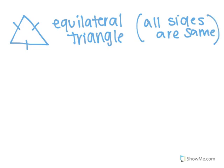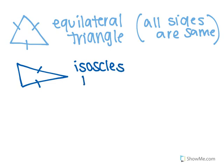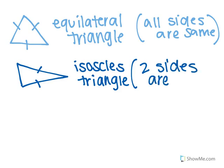or you could have one kind of like this. This is an isosceles triangle, where two sides are equal.